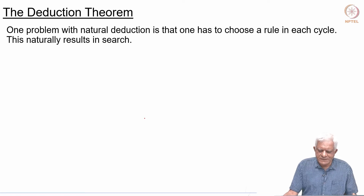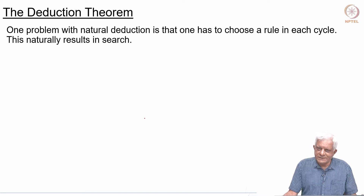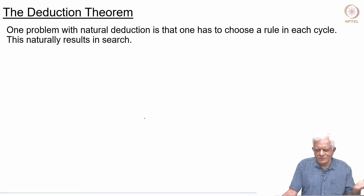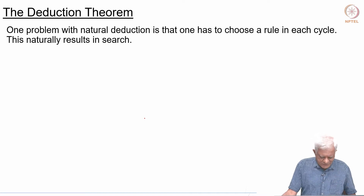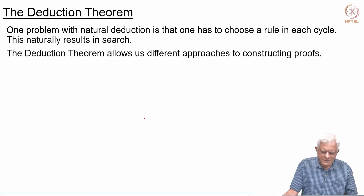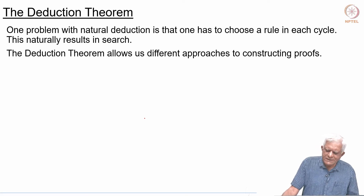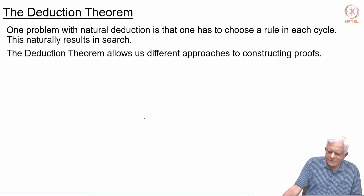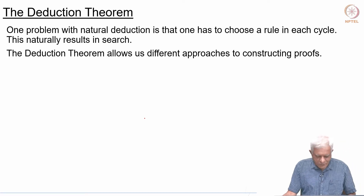The problem with natural deduction is that one has to choose a rule in each cycle, and that leads to search — essentially, should I choose this rule or should I use that rule and so on. Eventually, if you have enough time and resources you will find the proof. The deduction theorem sometimes gives us different approaches to constructing proofs.